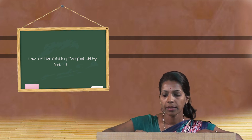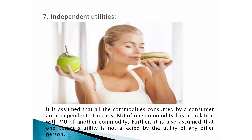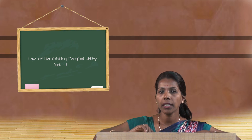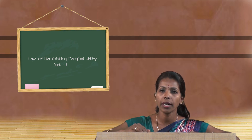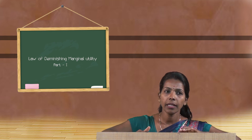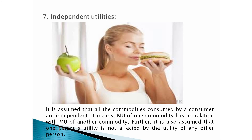The law assumes that the consumer is rational. The seventh assumption is independent utilities — all commodities consumed by a consumer are independent, meaning the marginal utility of one commodity has no relation to the marginal utility of another. Further, one person's utility is not affected by the utility of another person.